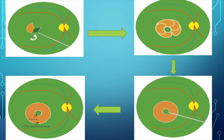Complete PVD must be ensured before proceeding to ILM peeling. This study ensured complete PVD induction with IVTA, and staining was done using 0.5% indocyanine green.